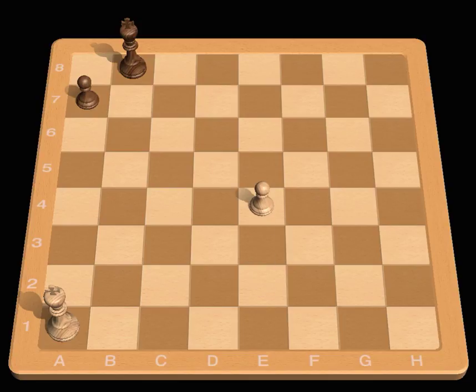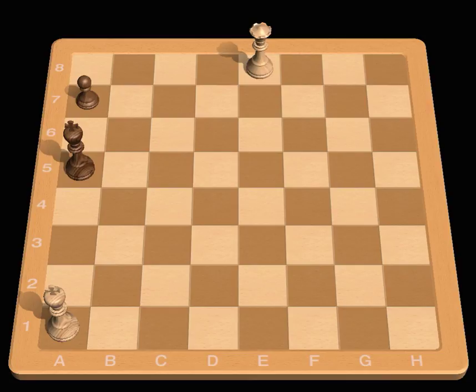When a pawn reaches the opposite side of the board, it can be promoted to any piece except a king.